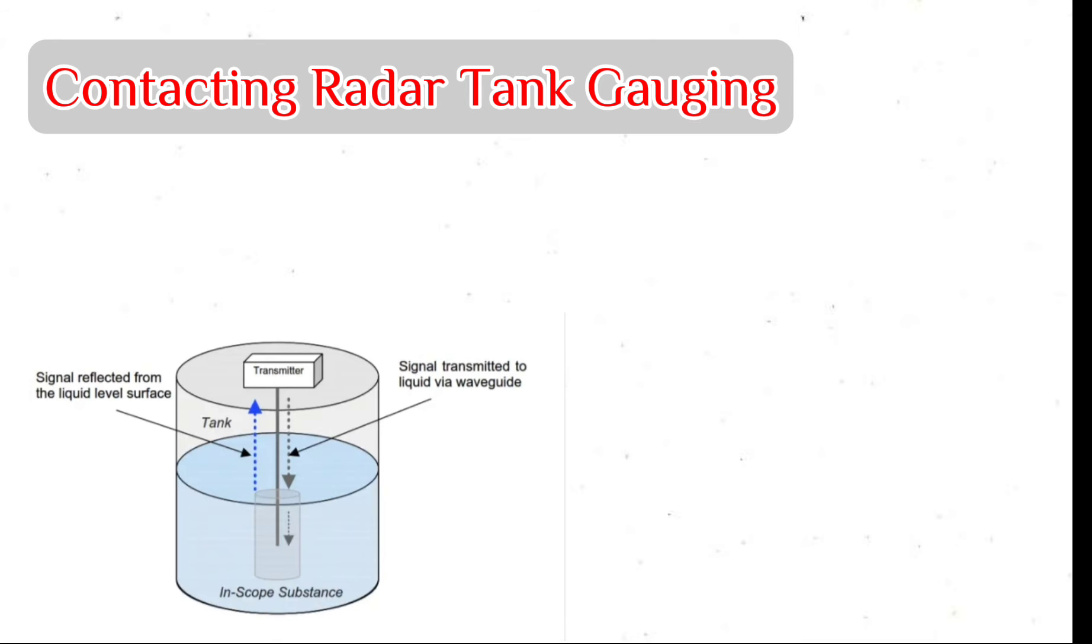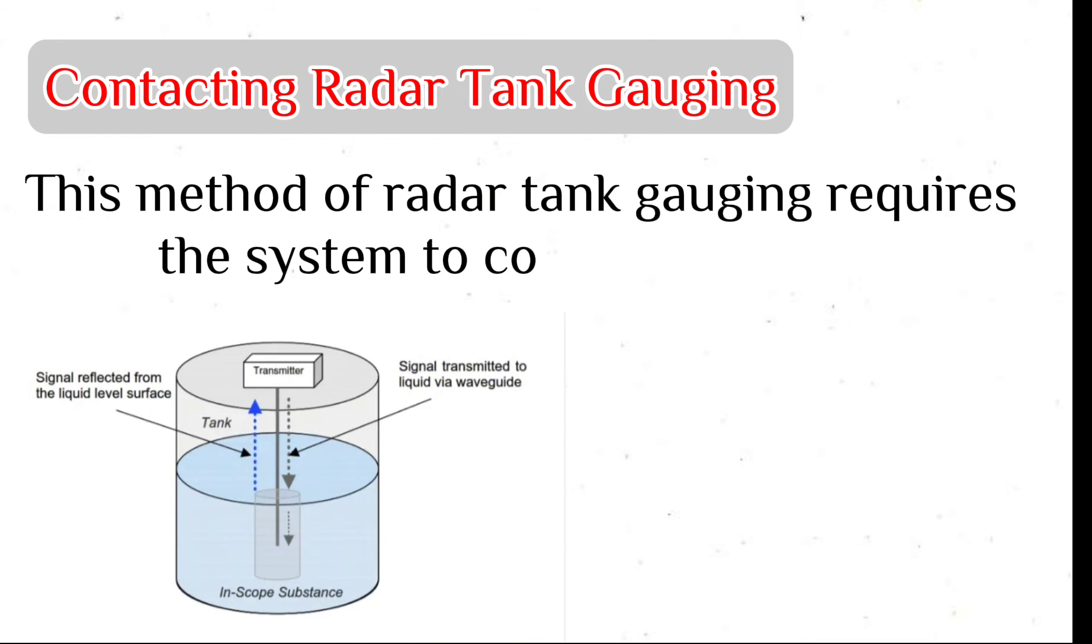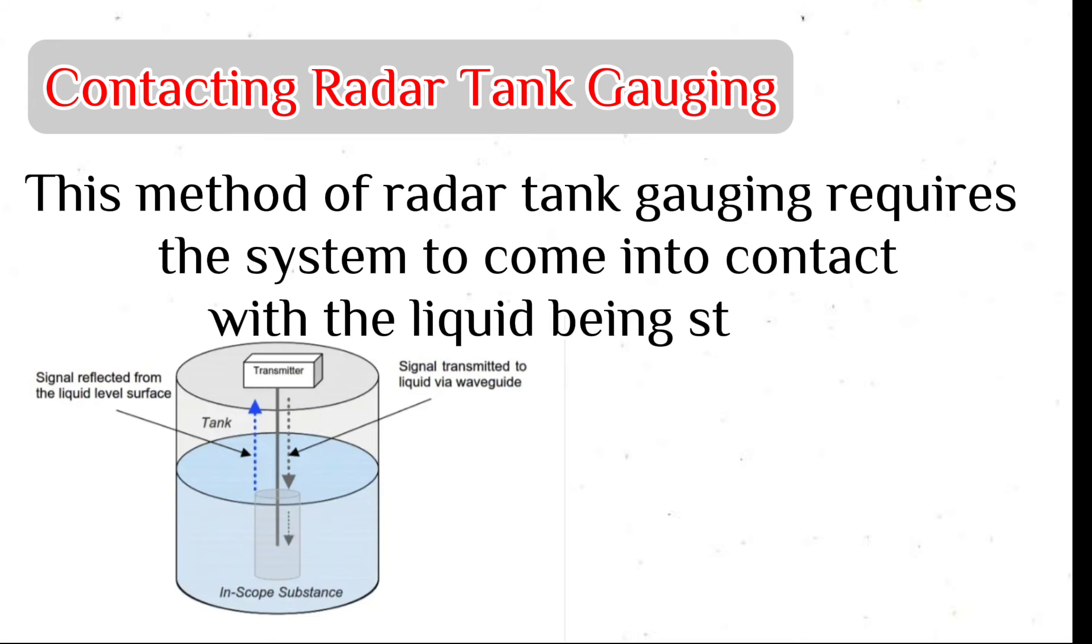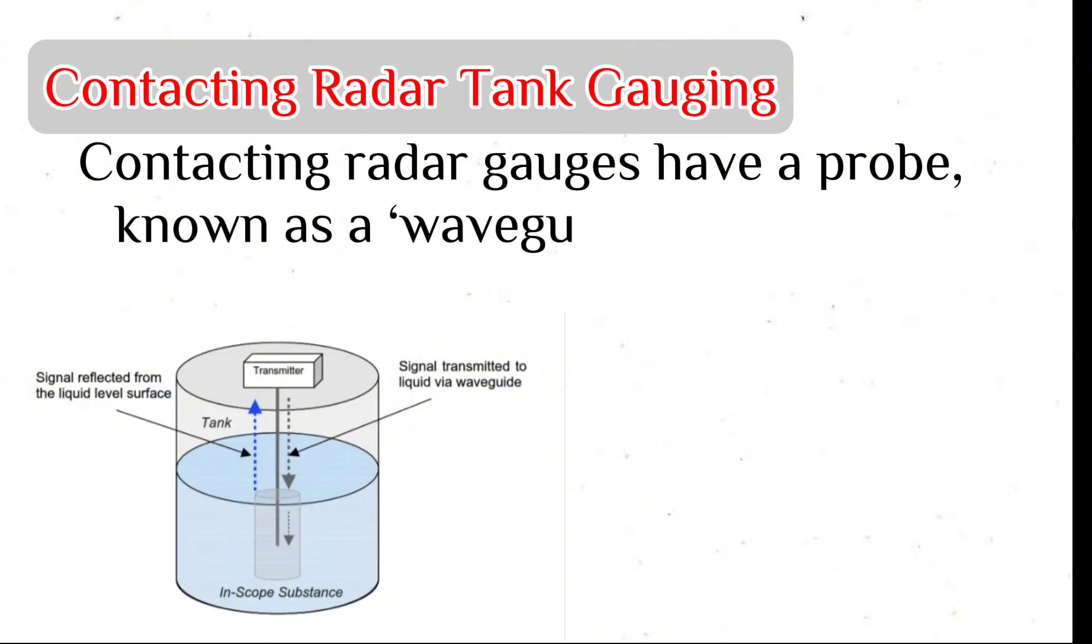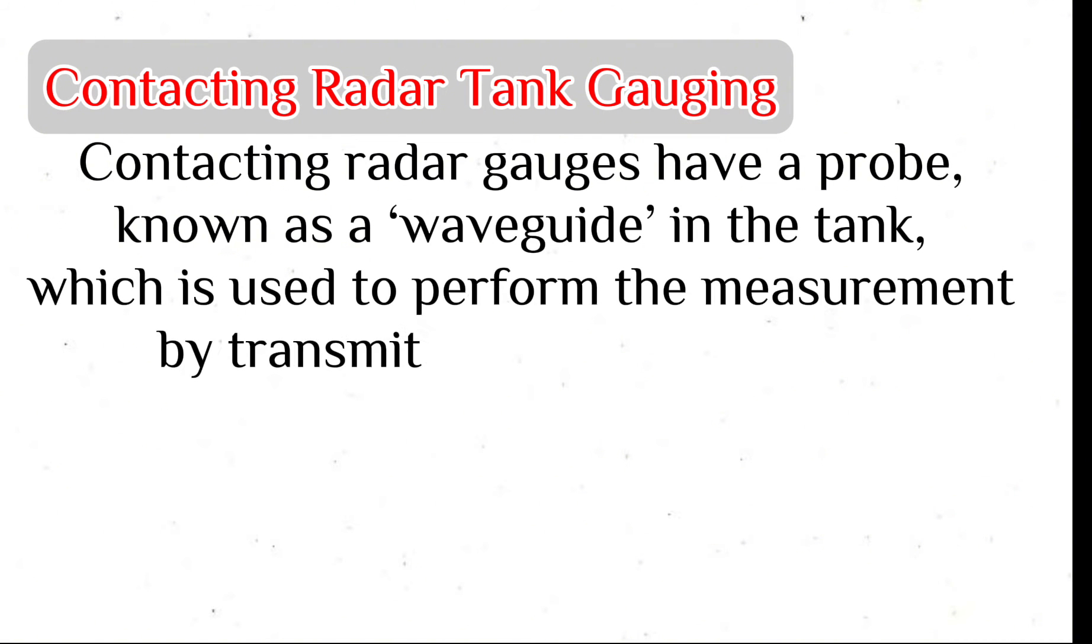Contacting radar tank gauging. This method of radar tank gauging requires the system to come into contact with the liquid being stored. Contacting radar gauges have a probe known as a waveguide in the tank which is used to perform the measurement by transmitting a periodic pulse.